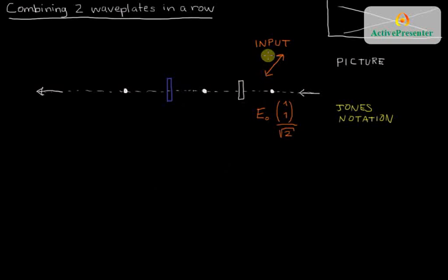And I'm drawing both a picture for that and also the Jones vector notation for it, where we have some electric field strength E naught, and then a unit vector, which is a 1, 1 state. And to normalize that, I have a root 2 in the denominator.